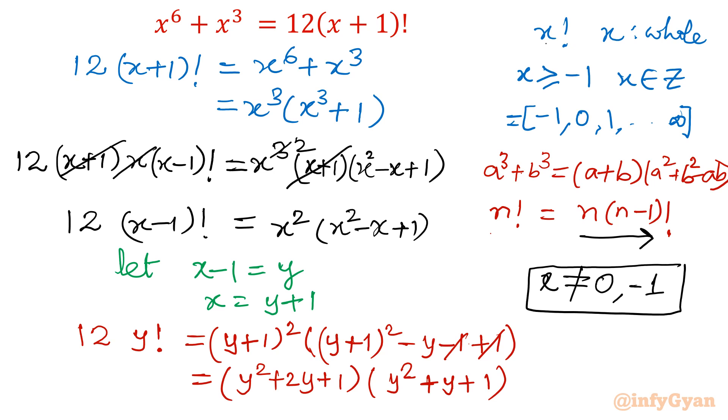And left hand side is 12 times y factorial. Let's take the product. So 12y factorial as it is, and right hand side would be if you add all the terms, you will get y power 4 plus 3y cube plus 4y square plus 3y plus 1.